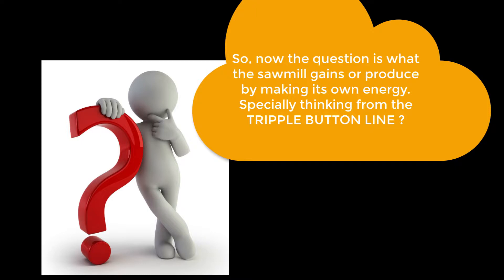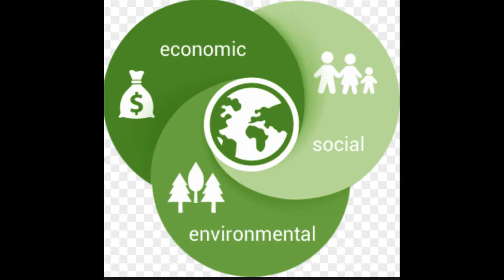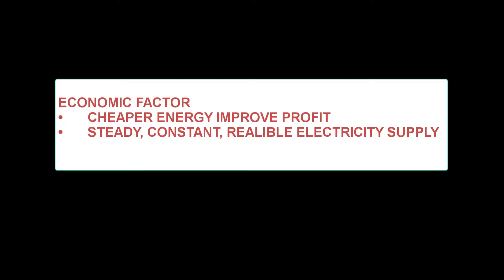So now the question is: what gains are produced by the sawmill making its own energy, especially thinking from the triple bottom line perspective? As we know, the economic, social, and environmental factors are critical considerations toward achieving sustainability. In terms of the economic factor, the sawmill has achieved cheaper energy, improved their profit, and gets a steady, constant, and reliable electricity supply.